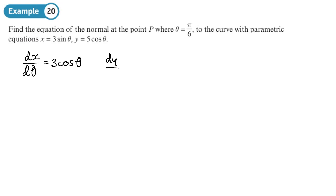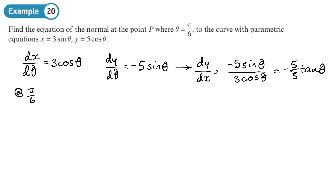And then dy/d-theta, that's going to be minus 5 sine theta. So from there we can get dy/dx, so that's going to be the y part differentiated over the x part differentiated. So you could simplify that to minus 5 thirds tan theta. So we've got what dy/dx is. At pi over 6, what's dy/dx?